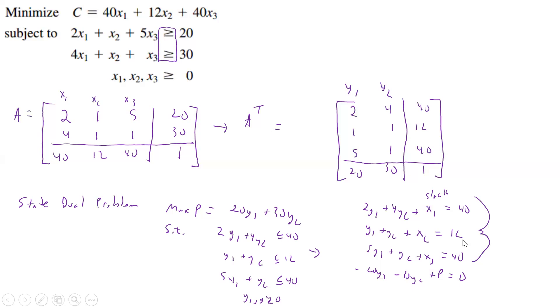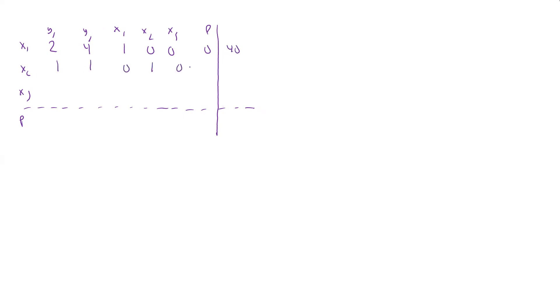Now let's write our tableau. Since we're doing slack variables, the columns going across are Y1, Y2, X1, X2, X3, P, and we have P at the bottom row. The rows on the side are X1, X2, X3, P. We plug in our variables: row 1 is 2, 4, 1, 0, 0, 0, 40; row 2 is 1, 1, 0, 1, 0, 0, 12; row 3 is 5, 1, 0, 0, 1, 0, 40; and the bottom row is minus 20, minus 30, 0, 0, 0, 1, 0.